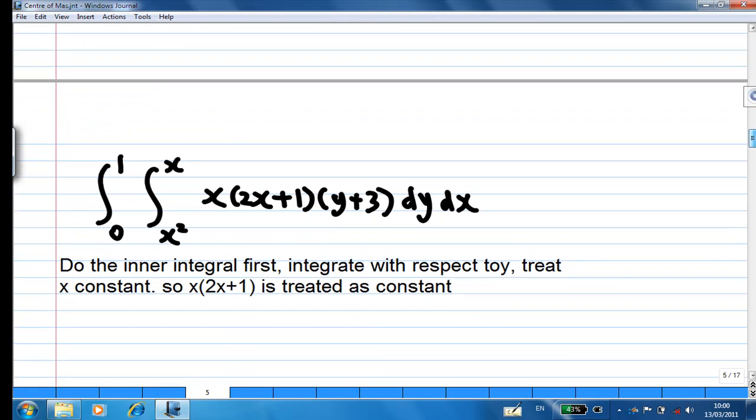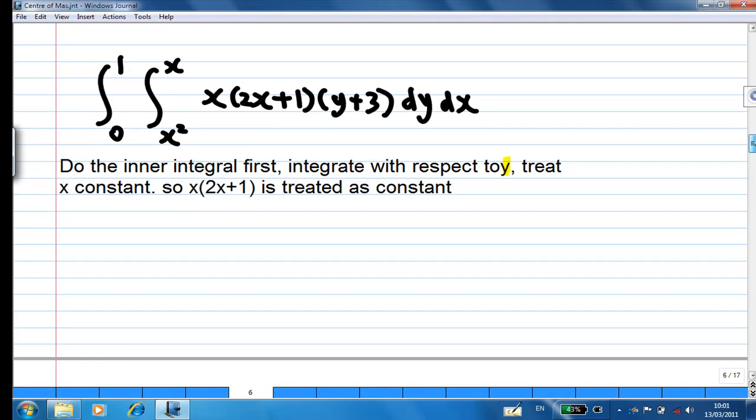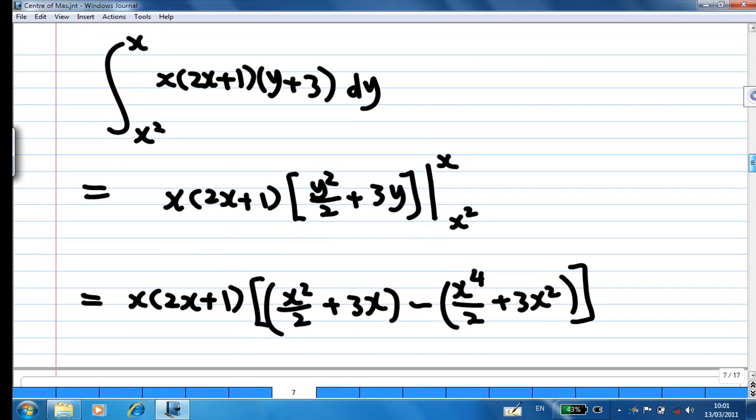We must do the inner integral first. We integrate with respect to y. x times 2x plus 1 is constant. Therefore, x(2x+1) is constant and we integrate. Integrate y, you get y² over 2. Integrate 3, you get 3y.